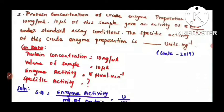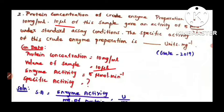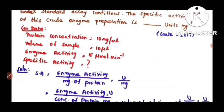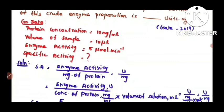The specific activity of this crude enzyme preparation is — units mg to the power minus 1. Here the given data are: protein concentration is 10 mg per ml, volume of sample is 10 microliters, enzyme activity is 5 micromoles per minute, and they are asking for specific activity in units per mg.